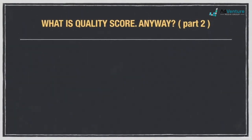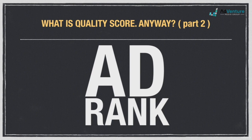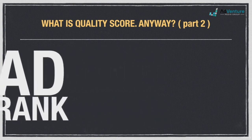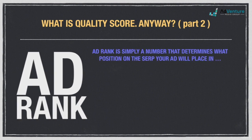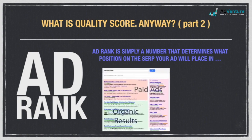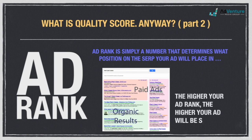One of the first numbers you need to be familiar with is something called ad rank. Your ad rank is just a number that determines what ad slot your ad will show in. The advertiser with the highest ad rank gets their ad in the very top ad slot on the search engine results page, or SERP. Your ad rank is calculated in a live auction every single time a search is performed on Google. The question is, how does Google calculate your ad rank?